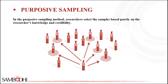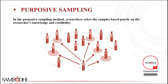Purposive sampling is common in qualitative and mixed method research design, especially when considering specific issues with unique cases. Unlike random sampling, which deliberately includes a diverse cross-section of age, background, and culture, the idea behind purposive sampling is to concentrate on people with particular characteristics who will enable you to answer your research questions.